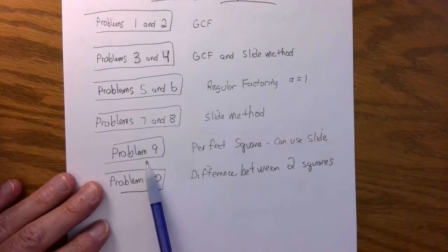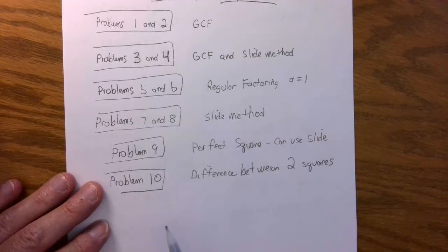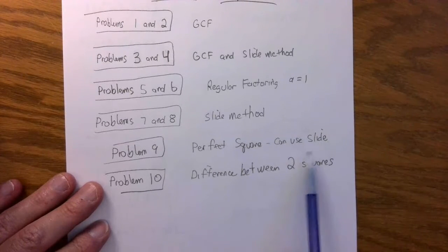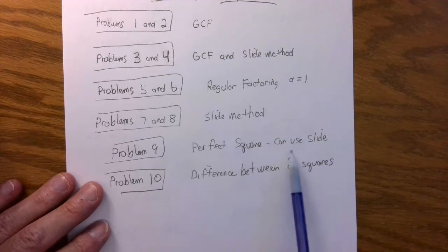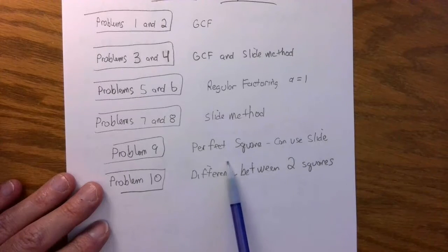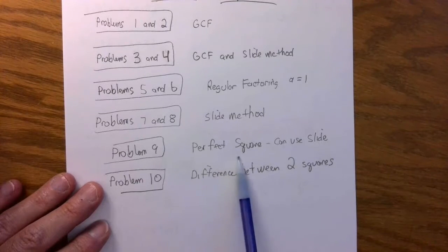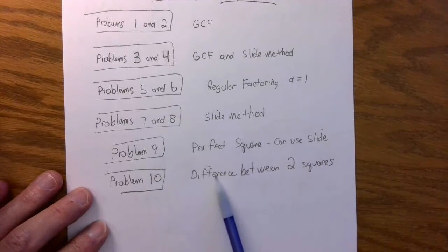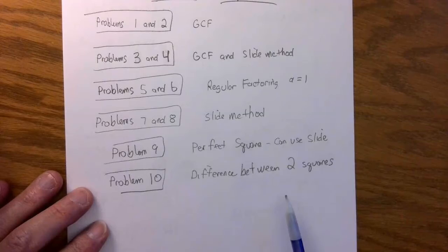Problem number nine is a perfect square. If you want, you can use the slide method. That's the way I usually do it because sometimes I have trouble recognizing a perfect square. But I'm letting you guys know, number nine is a perfect square. And number ten is maybe the easiest problem of all, the difference between two squares. Learn to recognize it.